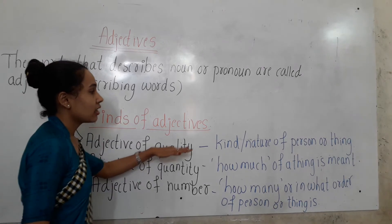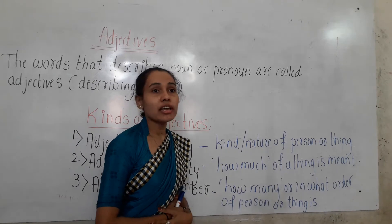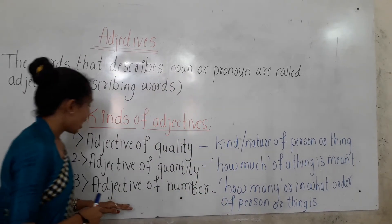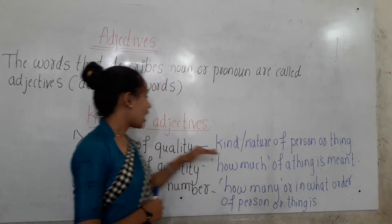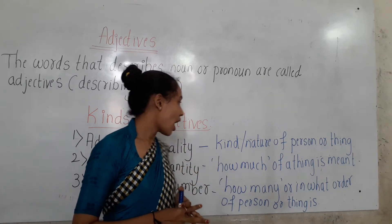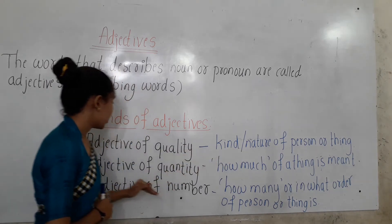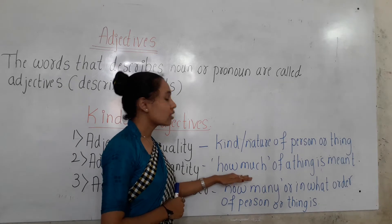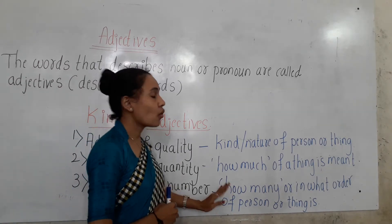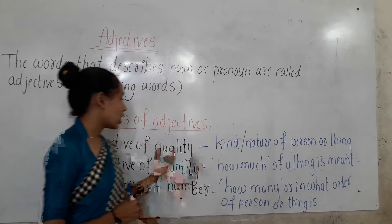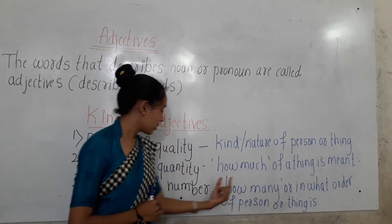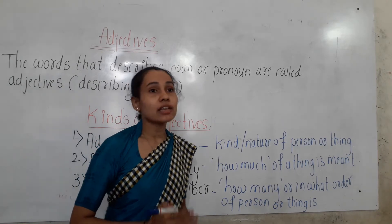Adjective of quality describes the kind and nature of a person or thing. Adjective of quantity describes how much of a thing. Adjective of number describes how many. Adjective of quality gives the answer for the question 'what kind,' quantity gives the answer for 'how much,' and number gives answers for 'how many, which, or in what order.'